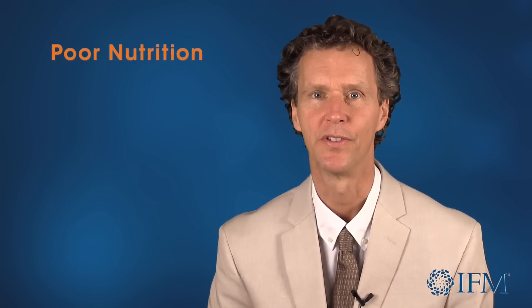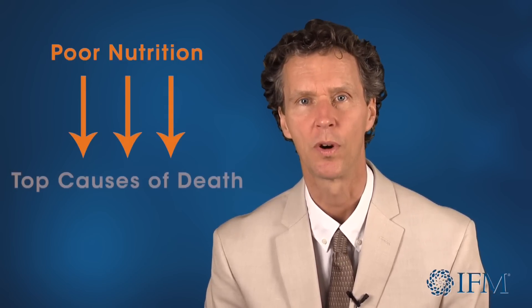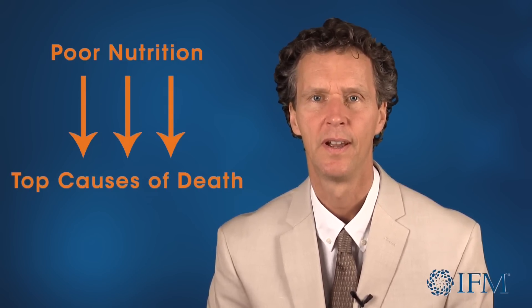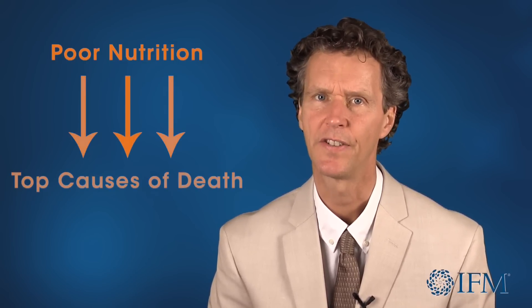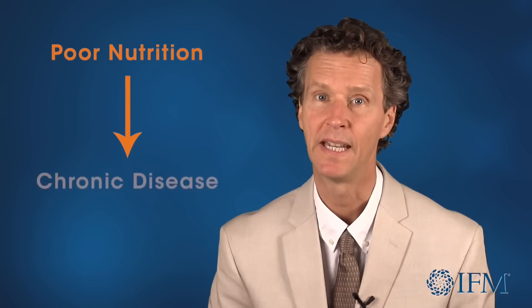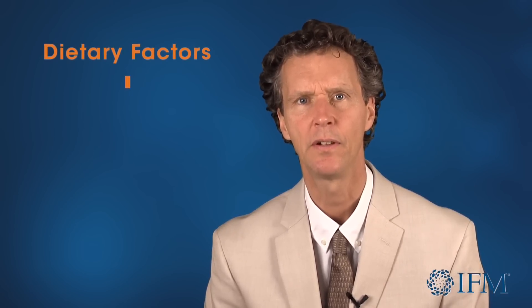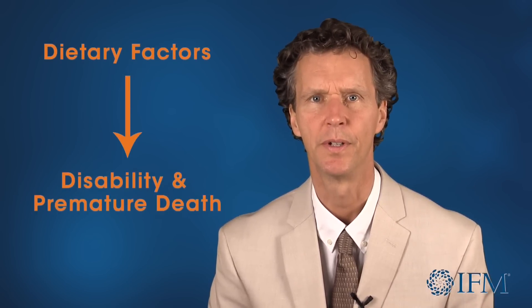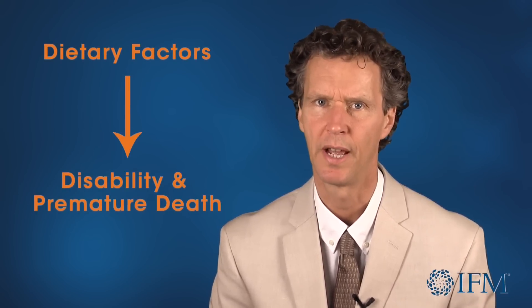Poor nutrition, especially nutrition that is poorly matched to a person's genetics and environment, is linked to three of the top four causes of death for Americans, and is a recognized factor in many other chronic diseases. A 2013 report identified dietary factors as the single most significant risk factor for disability and premature death.